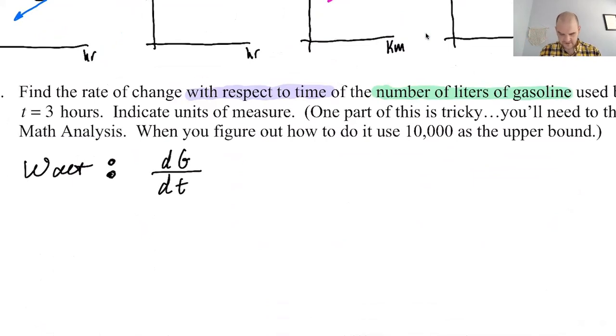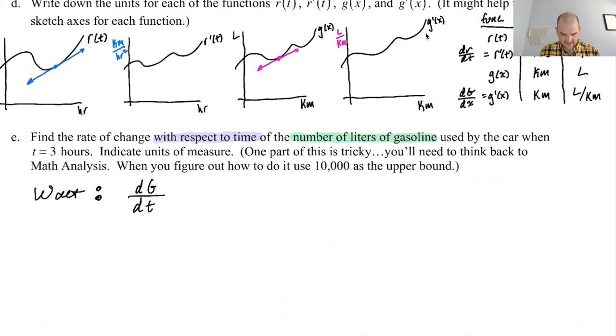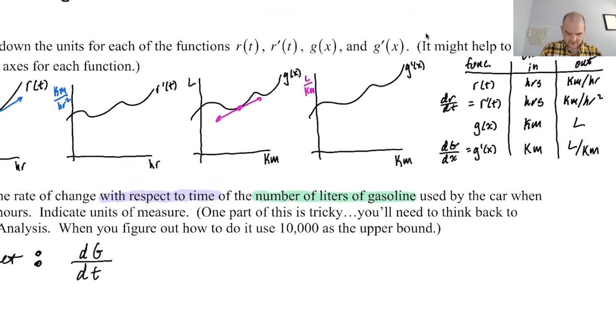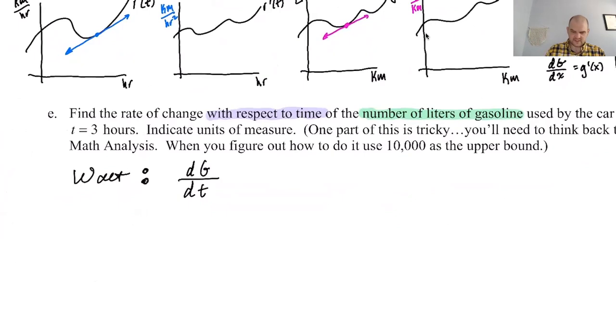Now, the issue is, g is actually a function of x. You can see up here, g is a function of x, which means to get dg dt, we're probably going to use the chain rule, right? So what would the units be on this answer? So let's take a look at that, because I think that knowing the units of the answer can be really instructive in terms of how you can go about finding the answer. So the units that we want are liters of gasoline per time as measured in hours. So we want liters per hour.